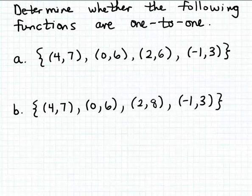This example is similar to a couple of our previous examples. We're given a couple of functions and we want to determine if these functions are one-to-one. In this case we have functions expressed as sets of ordered pairs, as opposed to tables, graphs, or formulas. A function is one-to-one if different inputs match different outputs, and we use that basic definition to determine if a function is one-to-one.